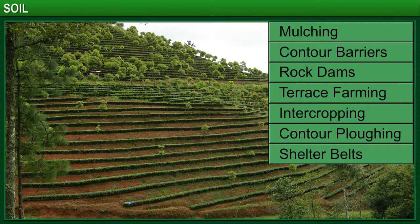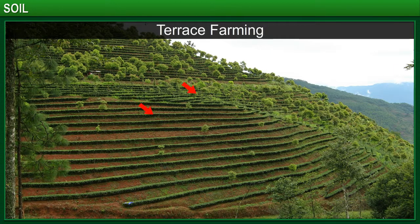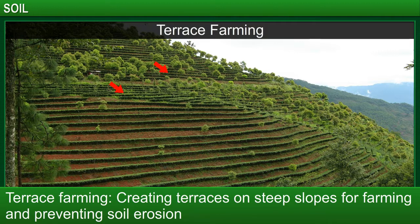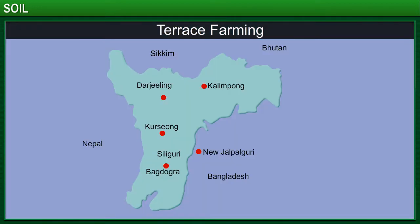To provide flat surfaces for farming on steep slopes, terraces are created. This is called terrace farming. Using terraces also prevents soil erosion and surface runoff. If you go to hill stations like Darjeeling, you will see that terrace farming is widely practiced there.